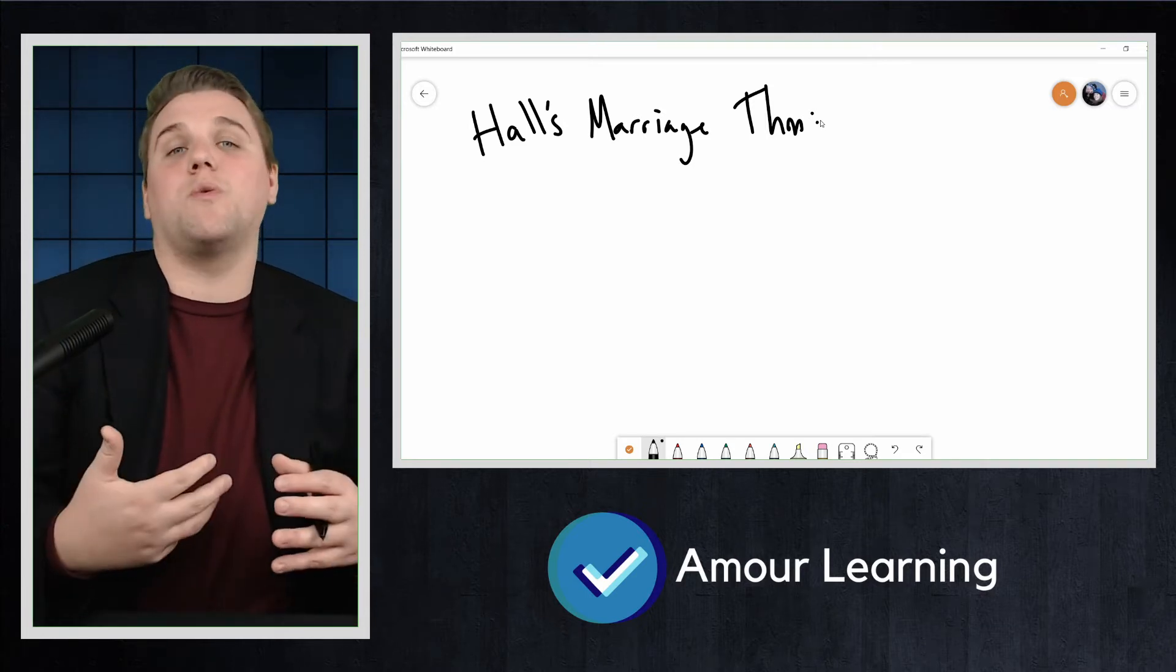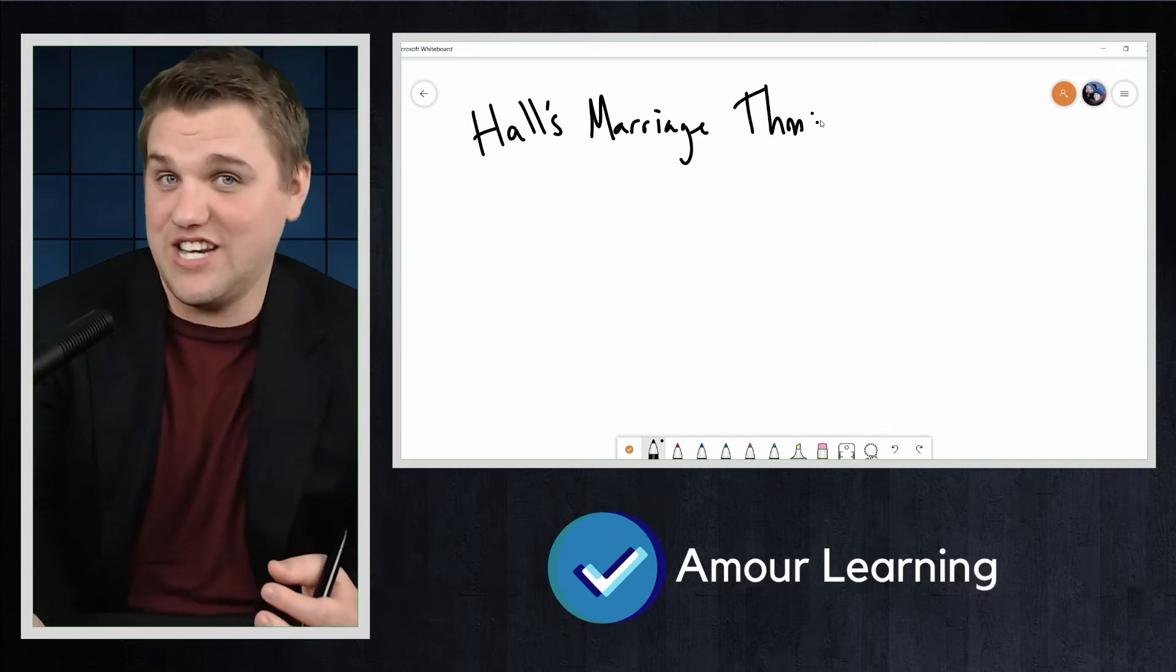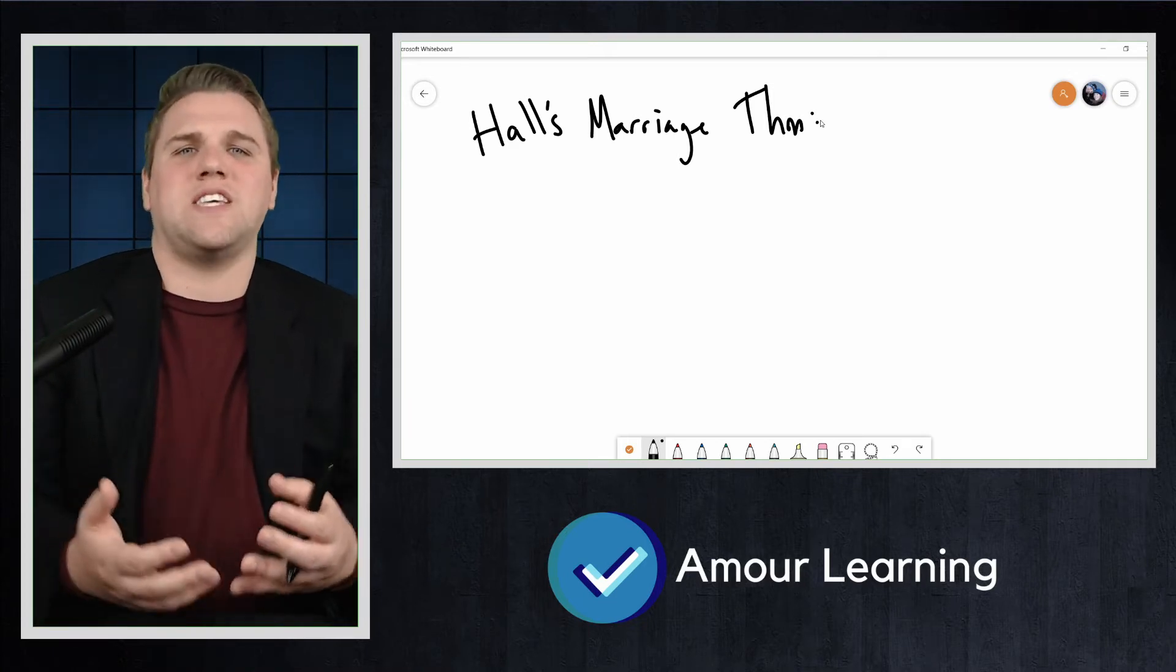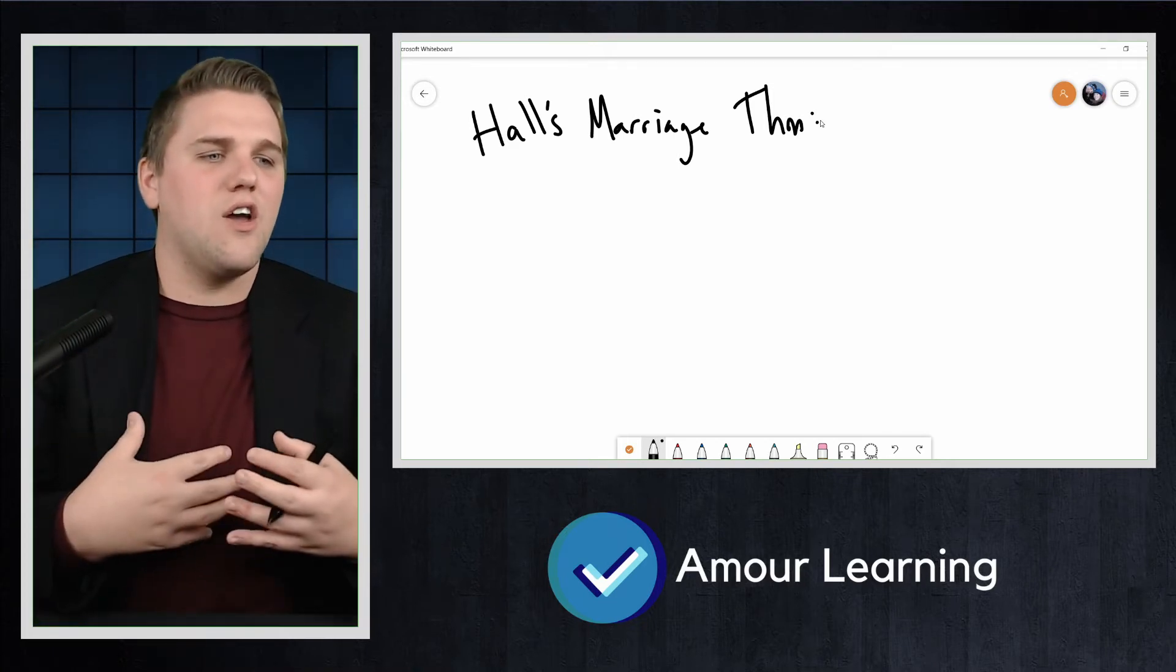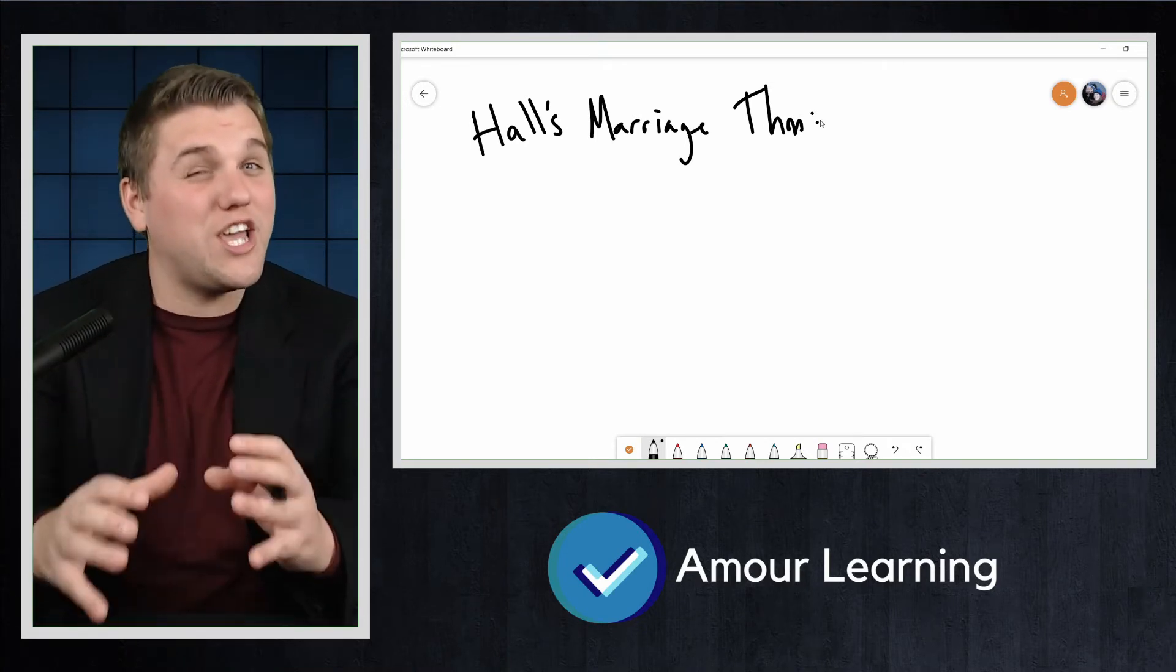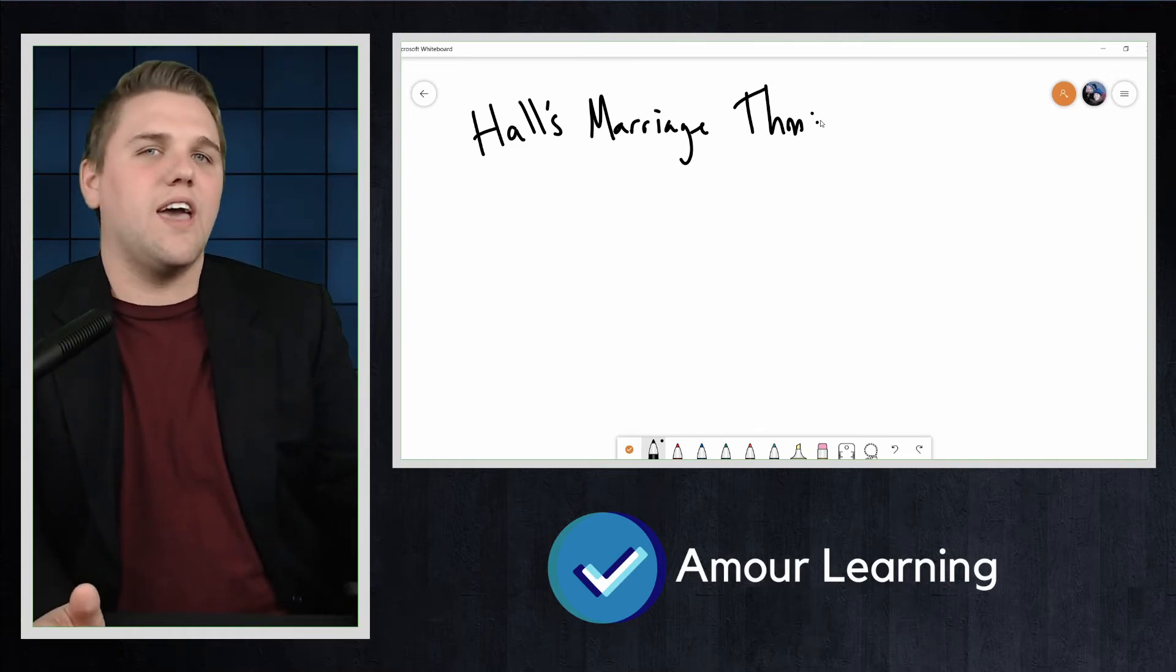1935 is really modern. Think about what was coming out in physics in 1935. Quantum theory or the theory of general relativity was first being understood around this time period. Hall's Marriage Theorem is really modern in mathematics. So what does it say?